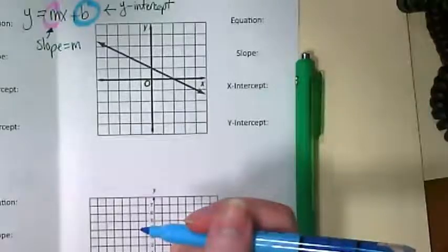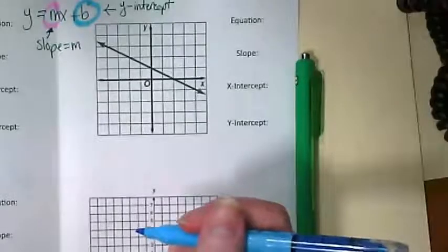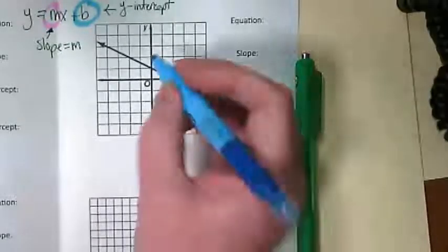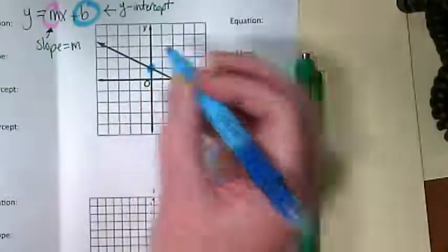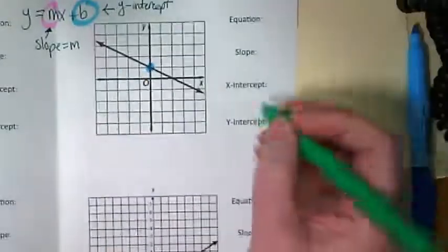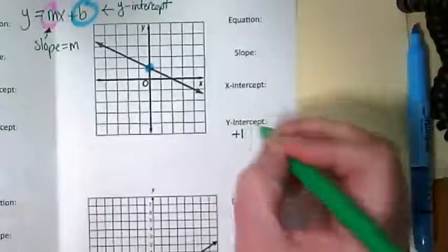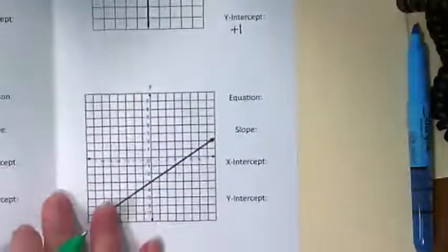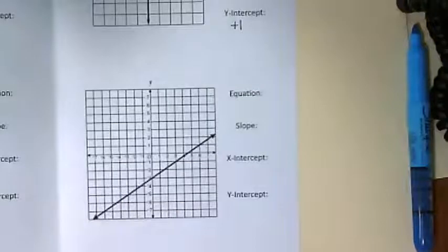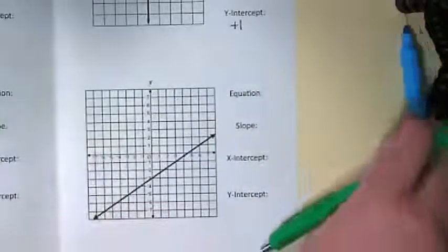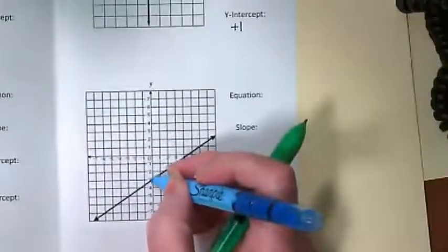Where is our graph crossing the y-axis for this graph? It's at one. And what about for this last graph? Negative three.